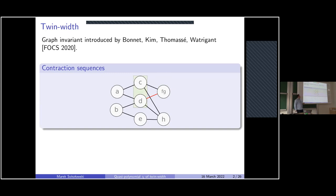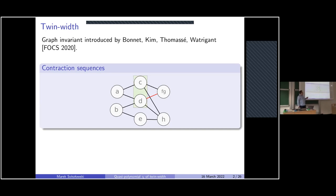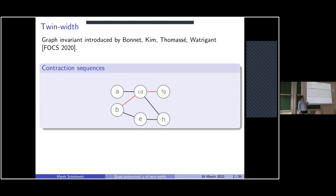A red edge appears connecting fg and d, meaning the connection is not pure: g was connected to d while f was not. After the contraction we mark this kind of mixed connection with a red edge, denoting it as a faulty connection. Continuing, we contract c and d. Both c and d are connected to a, giving a pure connection, but c and d have a mixed connection towards b since d is connected to b but c is not. cd also gets a mixed connection towards fg.